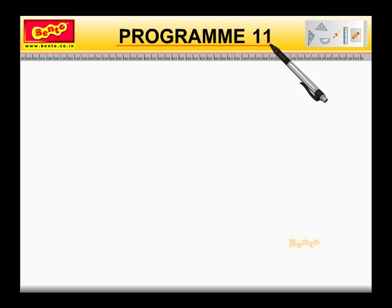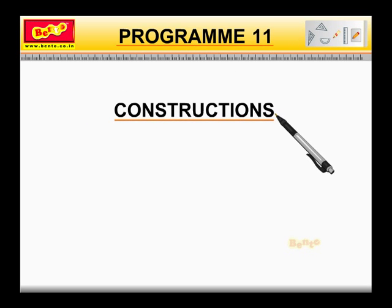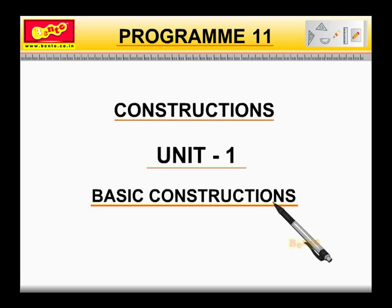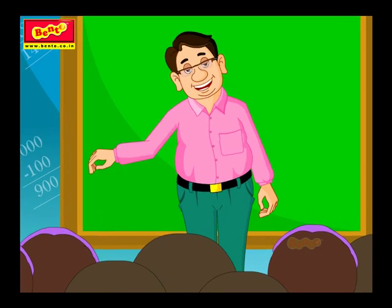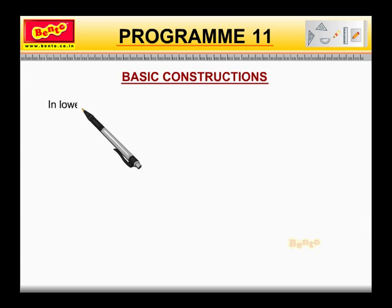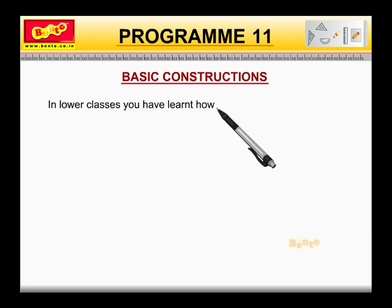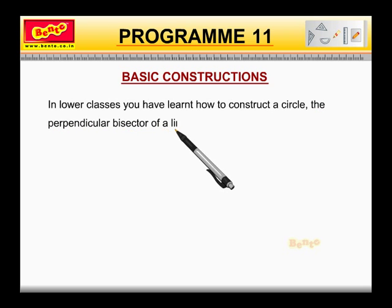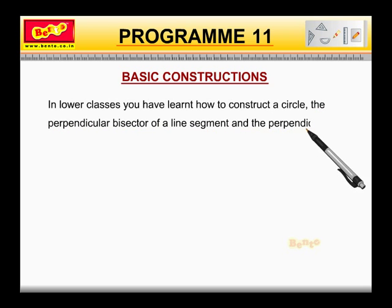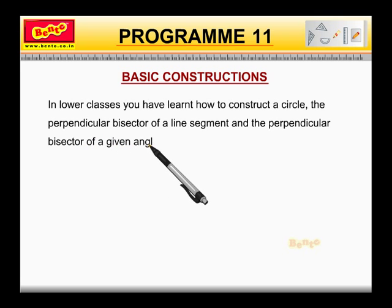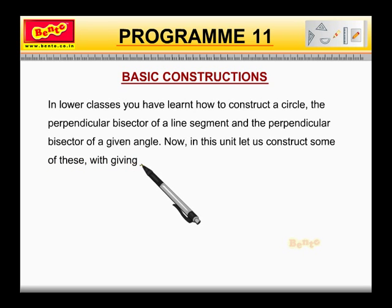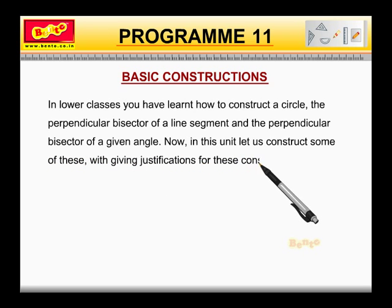Program 11, Constructions, Unit 1: Basic Constructions. Students, in lower classes you have learnt how to construct a circle, the perpendicular bisector of a line segment, and the perpendicular bisector of a given angle. Now, in this unit, let us construct some of these with justifications for these constructions.